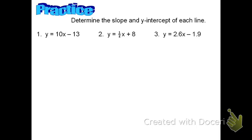In the first equation, y equals 10x minus 13, the coefficient of x is 10, so the slope is 10. The line goes up 10 and 1 to the right. The constant is negative 13, so the y-intercept is zero comma negative 13.